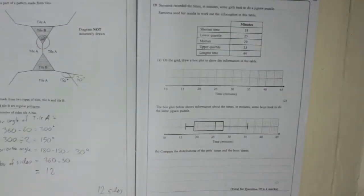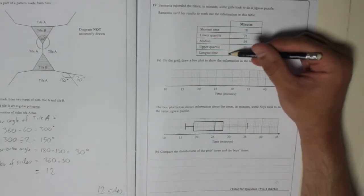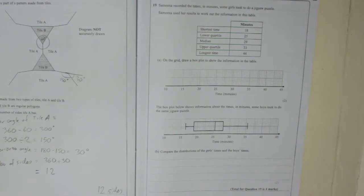Question 19. Samina recorded the times in minutes some girls took to do a jigsaw puzzle. Samina used her results to work out the information in this table. She's got the shortest time, the lower quartile, median, upper quartile and the longest time. On the grid, draw a box plot to show the information in the table.